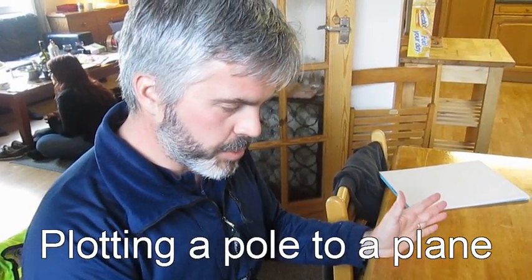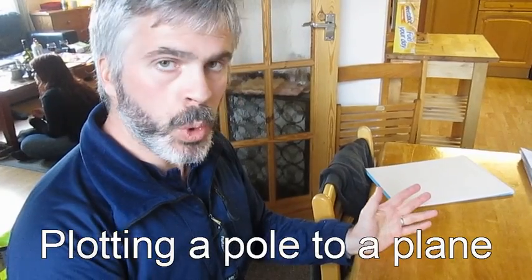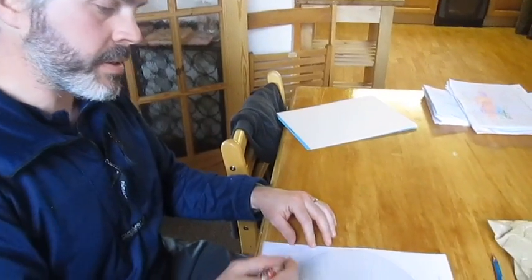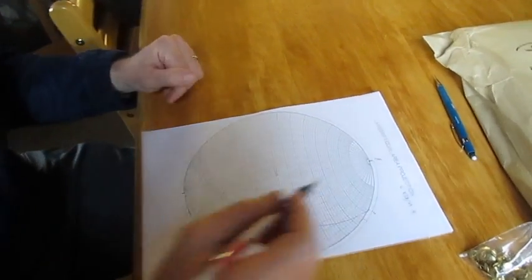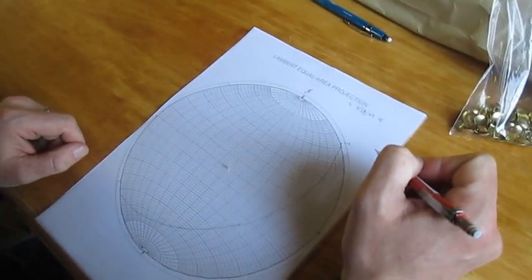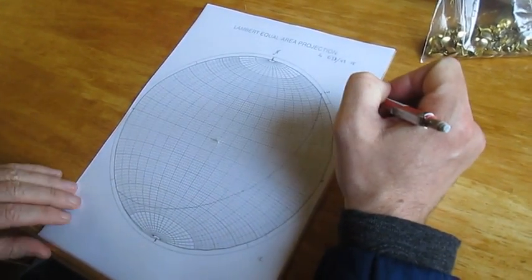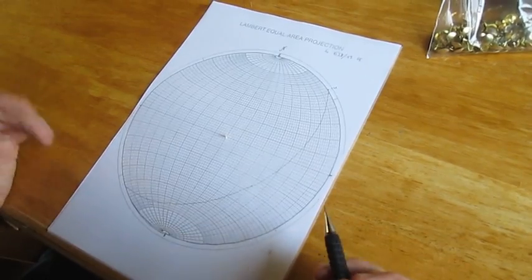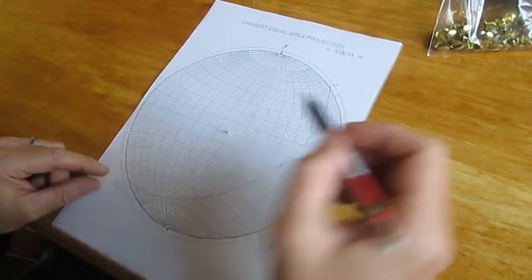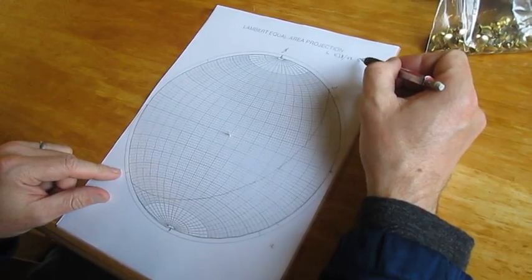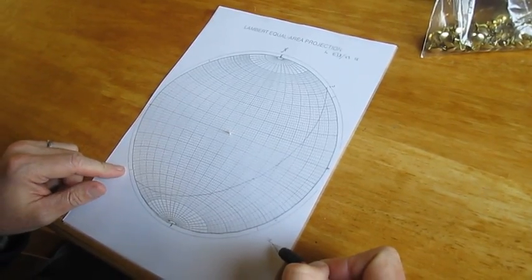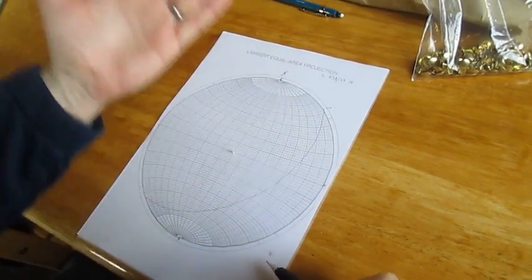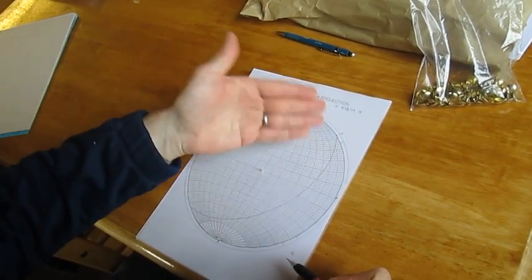So the other way we can plot data is using a pole to plane. So a great circle is one way of plotting planar data, but we can also plot poles. What I'll do actually is I'll plot the pole to the same data here. The key thing about plotting poles is when this is dipping southeast, so for a great circle, the great circle bows out toward the direction of dip. You can imagine a plane intercepting a kind of a semi-hemisphere.